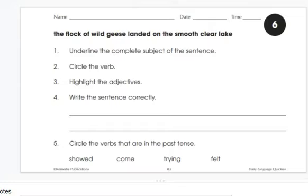It's about the flock, right? So the simple subject would be the flock. However, the complete subject would be the flock of wild geese. Let's underline that. There is your subject.